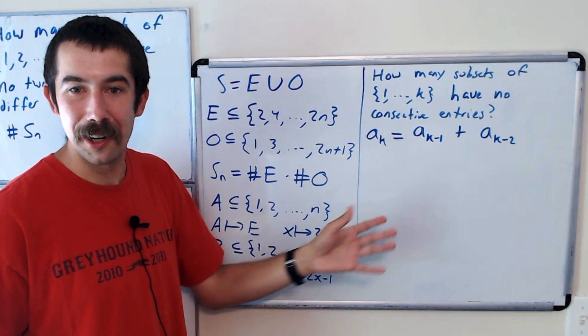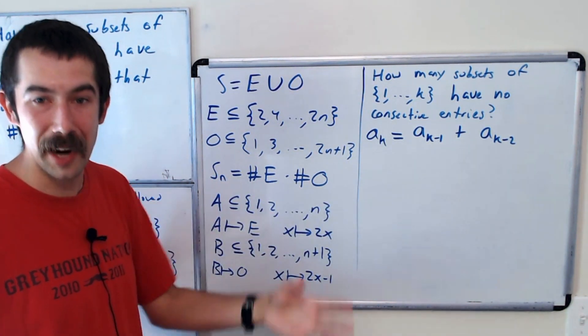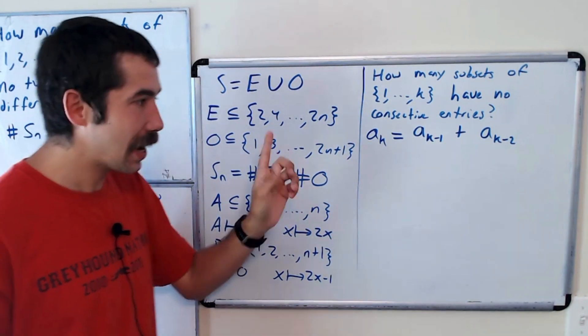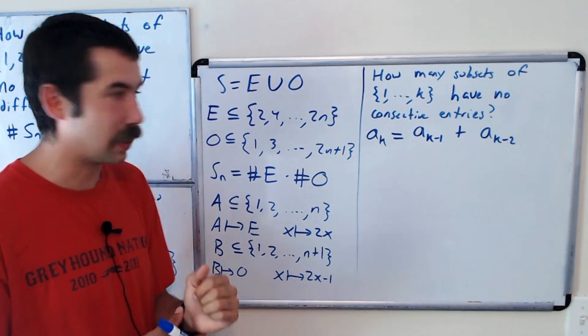So we have this recursion, and this recursion might look familiar to some of you. It's the recursion that the Fibonacci numbers satisfy. But we can't conclude yet that A sub K will be a Fibonacci number. We have to check the initial conditions.